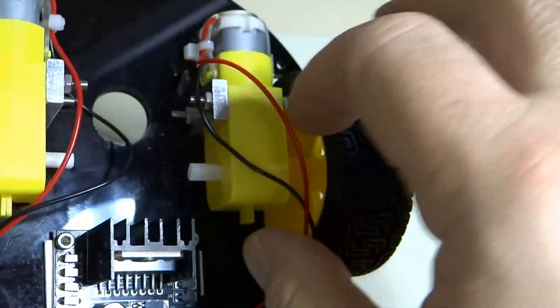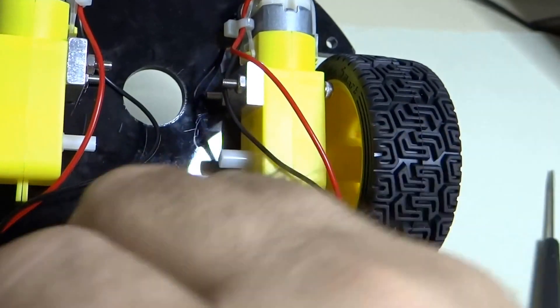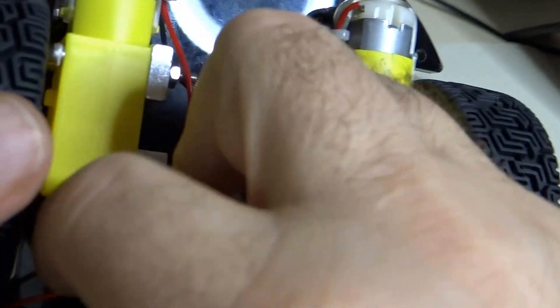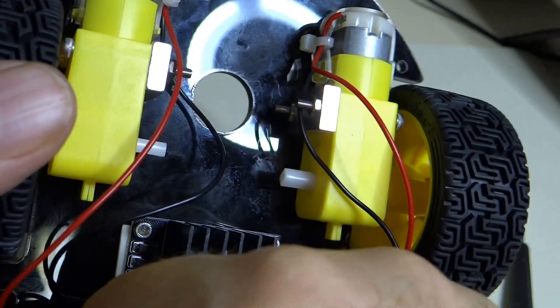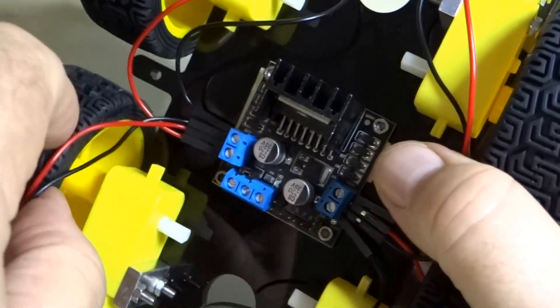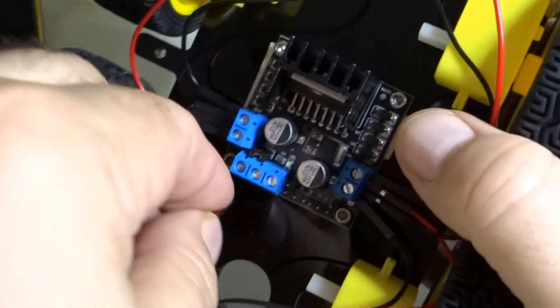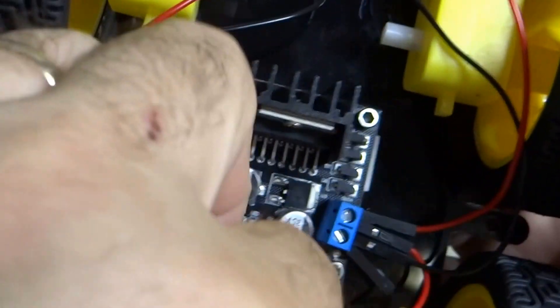Now you can see the wires kind of hanging all over the place. Eventually at some point we're going to want to tie these down so they don't get stuck in the motor. The motor doesn't rip the wires out. So we will come back to that later. Probably want to do some testing before we button everything up.